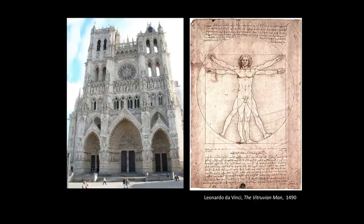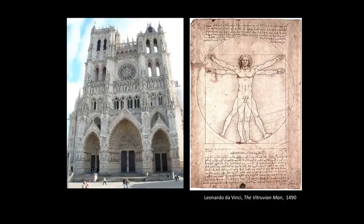What we see in Da Vinci's Vitruvian Man is a very different estimation. We have this image of man, his body circumscribed by a square and a circle. The square and the circle are very important for Renaissance artists — they were believed to be the perfect units of measurement. As such, they are the units of measurement God followed to create the universe.